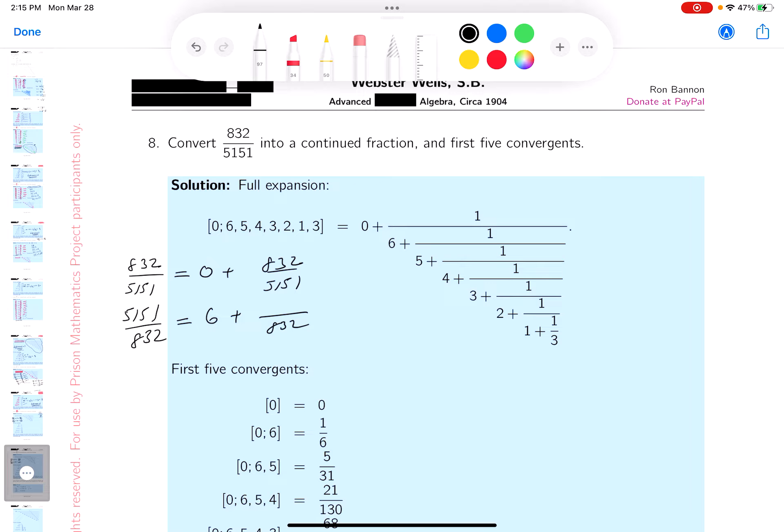Let me go through that. 6 times 832, that's 12. 6 times 3 is 18, 19, 49. And let's see, 499, whoops, sorry about that. 5151 minus 4992, that's going to give me 151 and 8, 159.